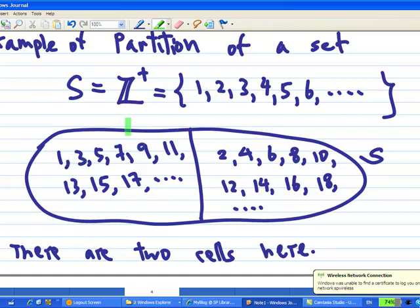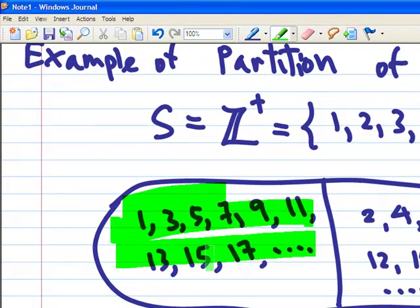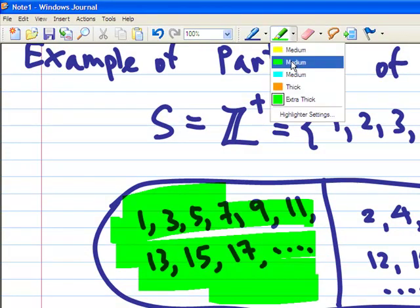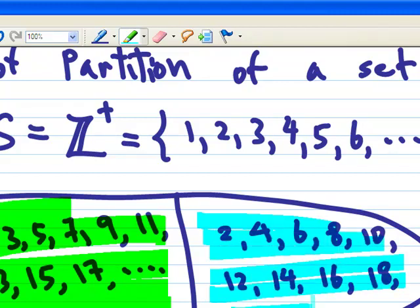One set consists of all the odd numbers: 1, 3, 5, 7, 9, 11, 13, 15, and 17. And another set consists of all the even numbers: 2, 4, 6, 8, 10 and so on.